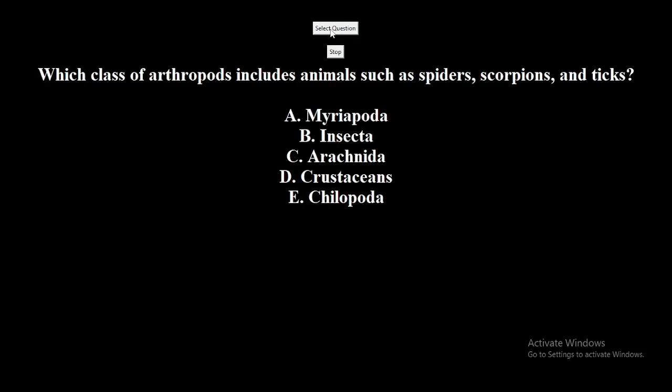Which class of arthropods includes animals such as spiders, scorpions, and ticks? A. Myriapoda. B. Insecta. C. Arachnida. D. Crustaceans. E. Chilopoda. The correct answer is Arachnida.